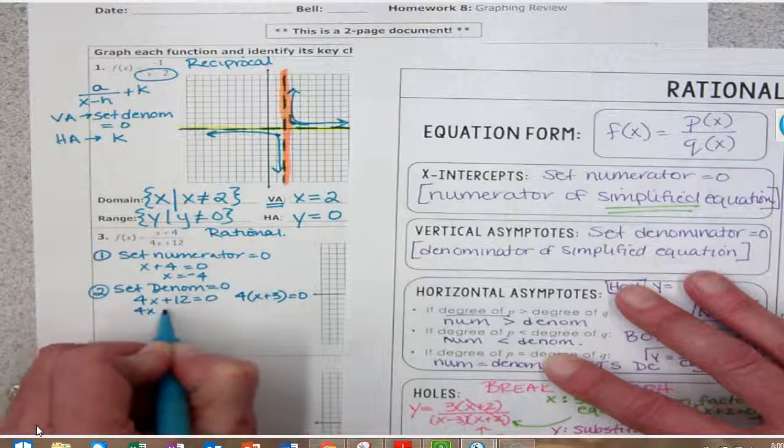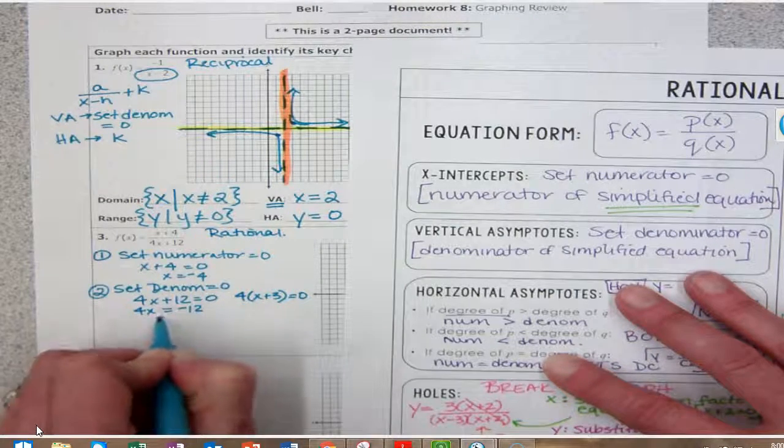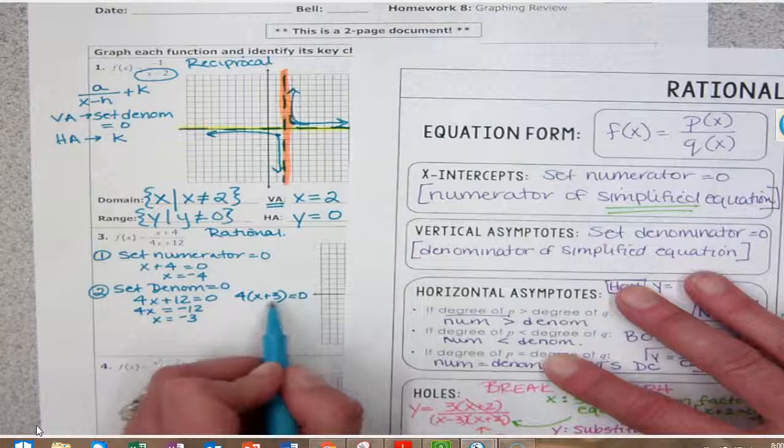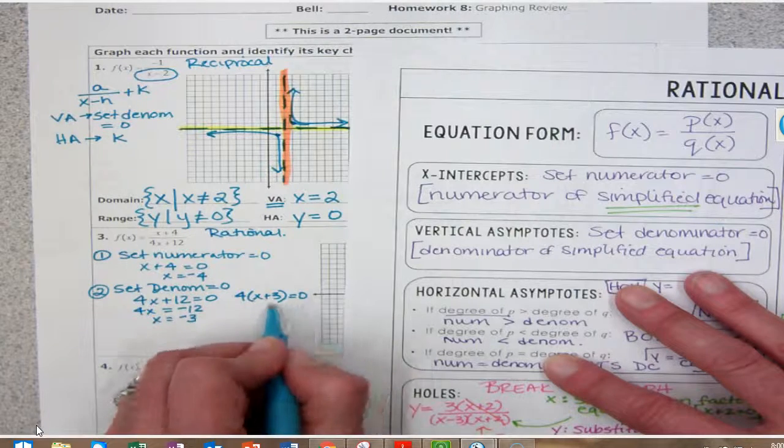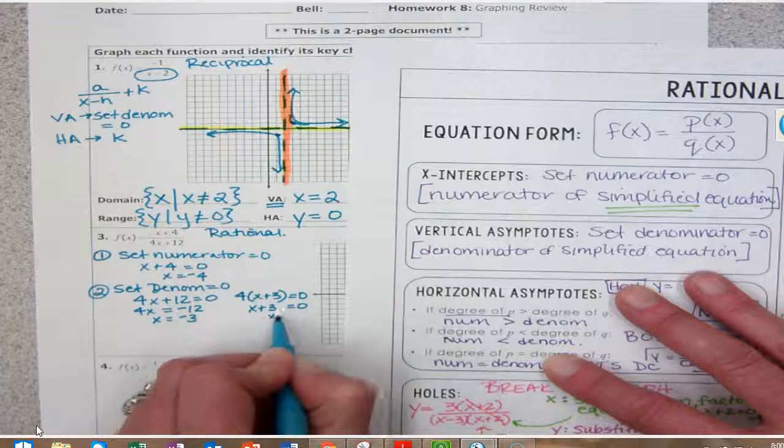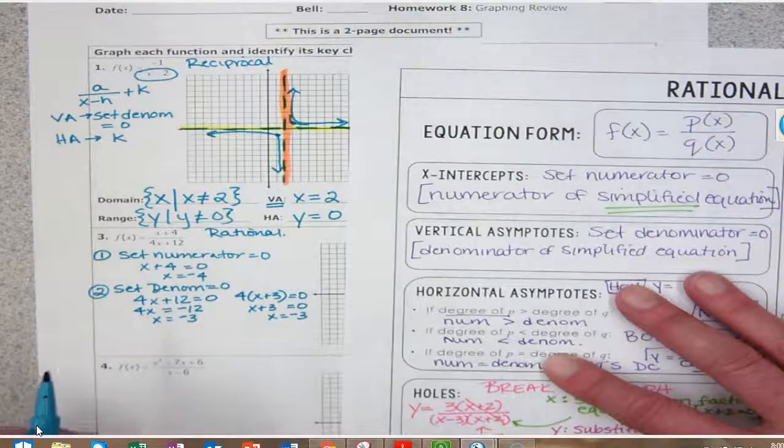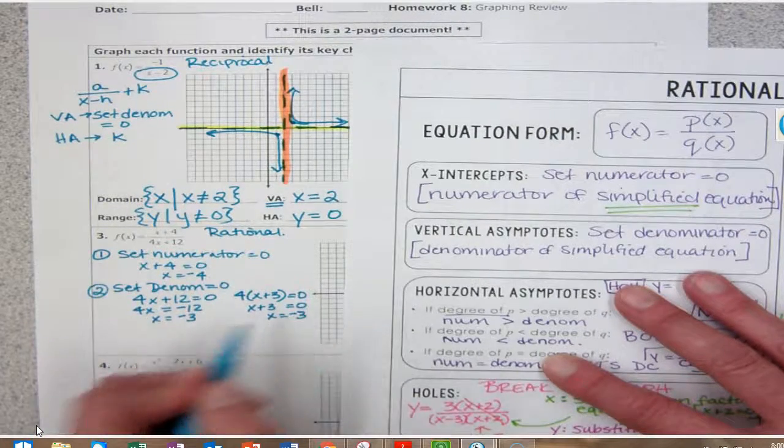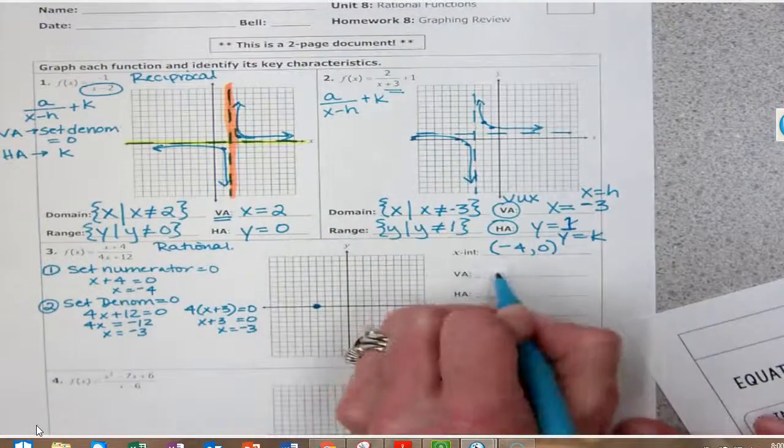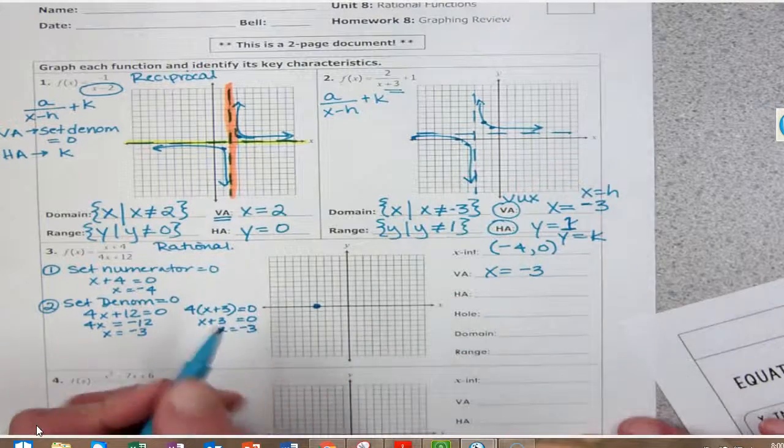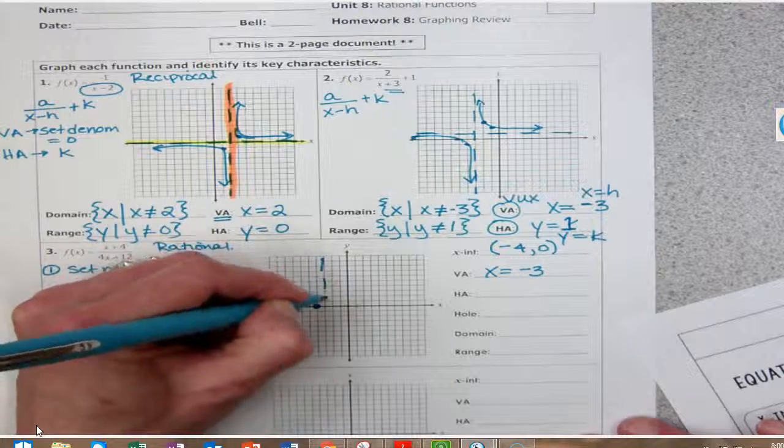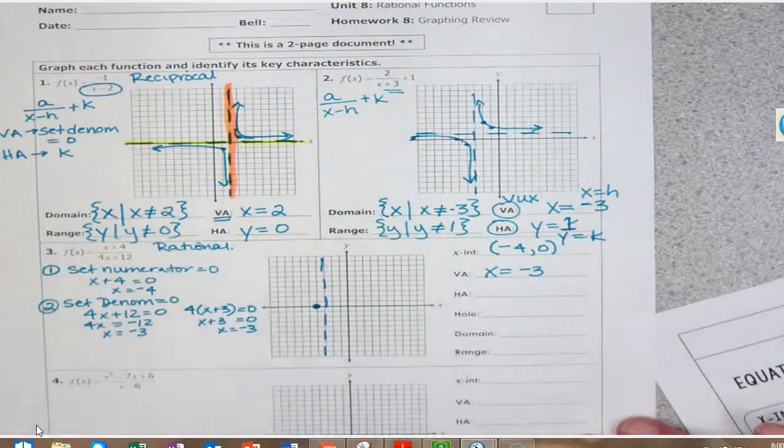I can solve this: 4x equals negative 12, x equals negative 3. I could do it here. I'd do the same thing, divide by 4, and get 0 divided by 4 is 0, x plus 3, x equals negative 3. So I get x equals negative 3 is my vertical asymptote. x equals one two three, right here. Done.